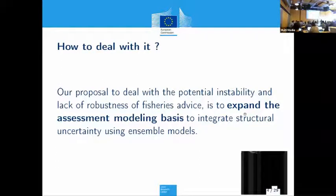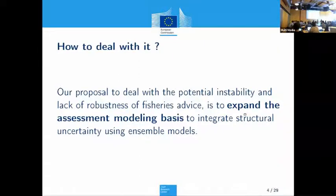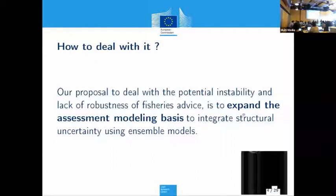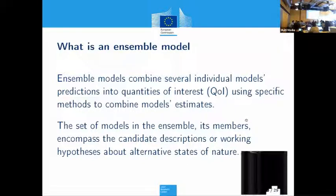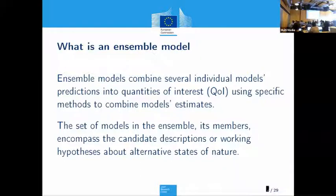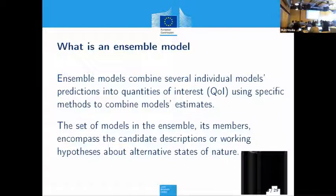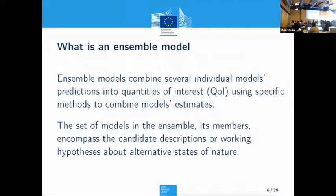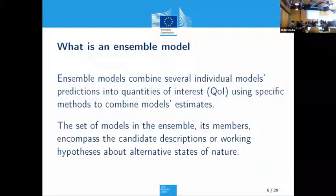One thing you can do is expand that model — try to build more models or bring in more models that represent other parts of that uncertainty, other structures, and put them together. In a very simplistic way, an ensemble model is a way of putting together several quantities of interest that each model produces — think about SSB, recruitment, F, or something like that. You have several models all generating those quantities of interest, and ensemble models are a technique that allows you to bring those things together and compute your ensemble prediction and variance.